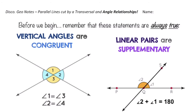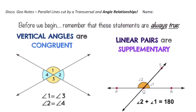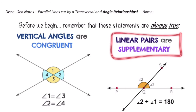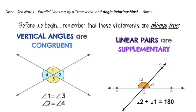Vertical angles are always congruent. When you have two intersecting lines, they form pairs of angles across from each other, and those pairs of angles will always be congruent — their measures will always be equal. So the measure of angle 1 equals angle 3, and angle 2 equals angle 4. Linear pairs are always supplementary — those are adjacent angles whose non-adjacent sides form a line, and they always add up to 180 degrees.